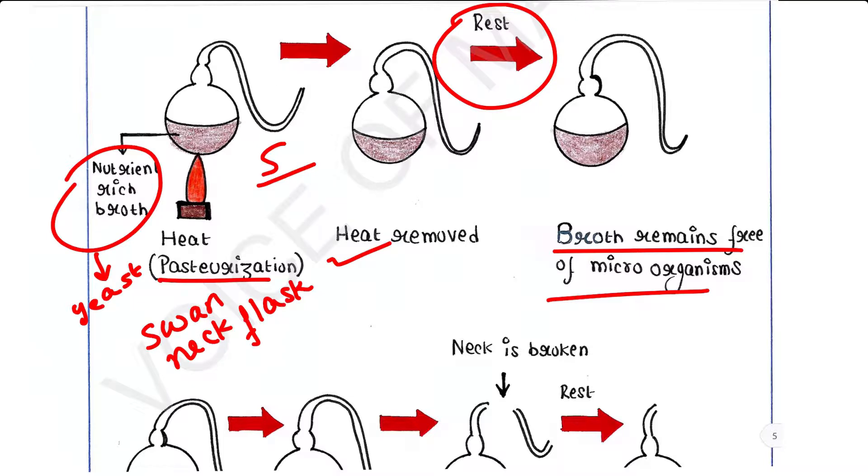He explained the germ particles in the air could not enter the flask due to the S-shape and became trapped at that point, at this turn. Therefore, they were not able to contaminate the broth.